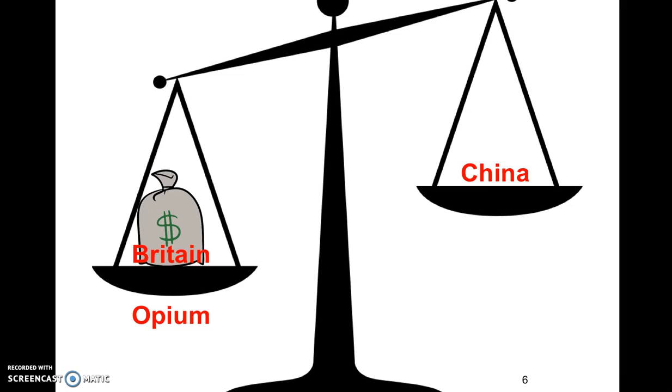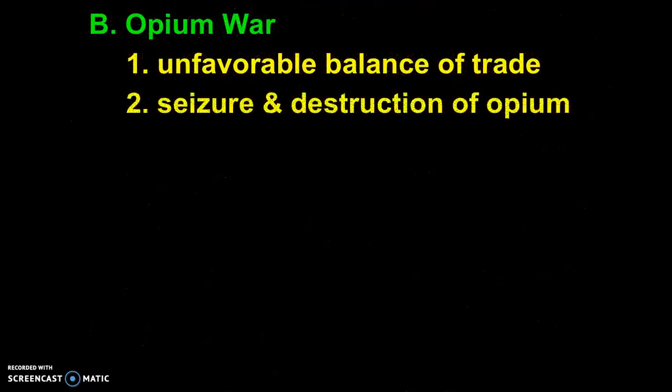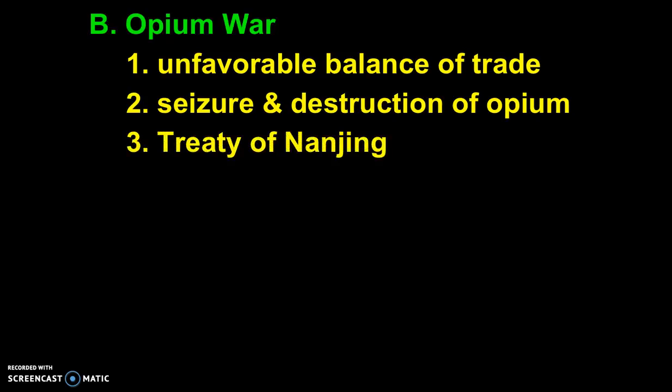Obviously China was very upset about this because it's such a destructive drug. China seized this illegal opium — because remember, Britain only had access to one port, Guangzhou. So they seized the opium and destroyed it. Then Britain demanded that China pay for the price of the opium. They refused, and war began. Britain easily defeats China — the British Navy sailed up the Yangtze River all the way to the capital and forced China to surrender and sign the Treaty of Nanjing.